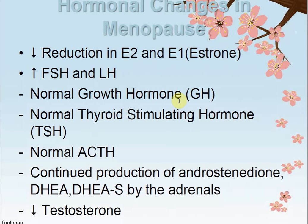Hormonal changes in menopause include a decrease in both estrogen 2 and estrogen 1 levels. The normal ratio is 15 to 18 picograms per milliliter. There is an increase in follicle-stimulating hormone (FSH) and luteinizing hormone (LH), which become stimulated.